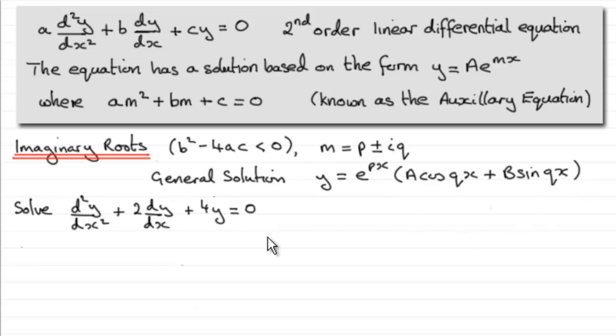Now I've got an example here, d squared y by dx squared plus 2 dy dx plus 4y equals zero. You might like to pause the video, have a go at this and come back when ready. And you can check your work solution with mine.